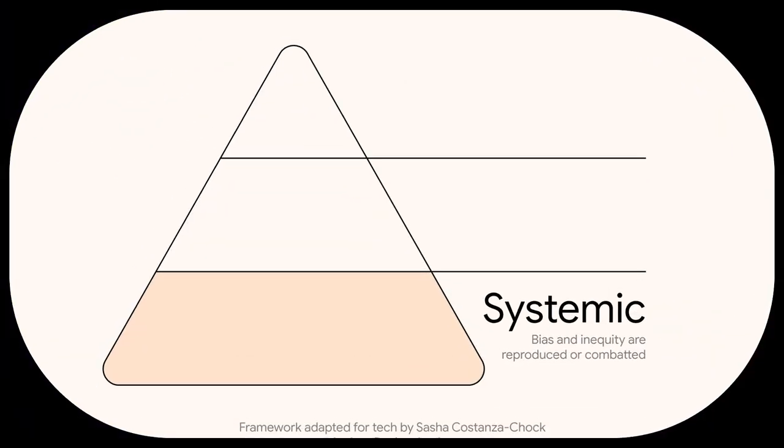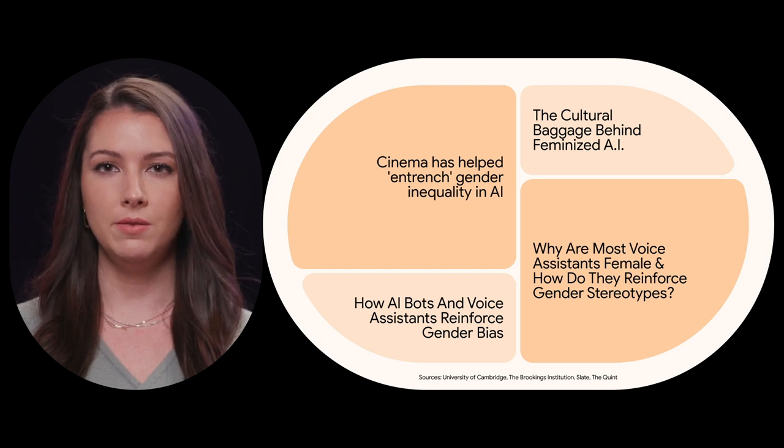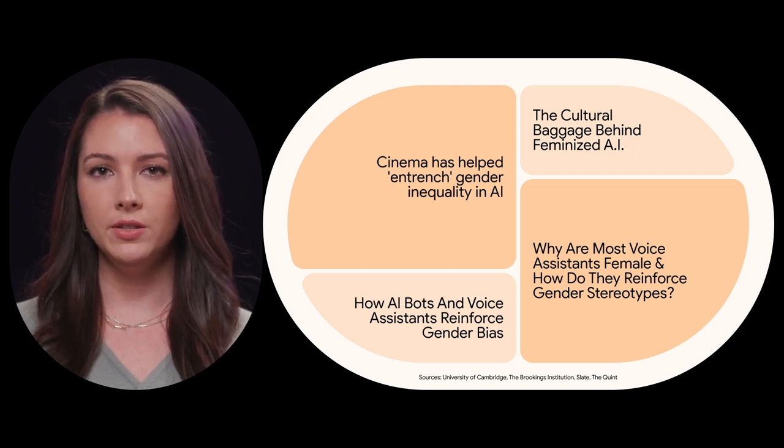This leads to our final topic: the systemic level. The way products are designed can reproduce or challenge social hierarchies and systems. For example, voice assistants are either exclusively female or highly feminized by design, which reinforces gender stereotypes in roles. In contrast, chatbots typically in roles such as law or finance are almost entirely masculine voices. This reinforces gender stereotyping in the workplace, as women are disproportionately overrepresented in lower-level secretarial roles and men in leadership and authoritative roles, continuing to reproduce social hierarchies.